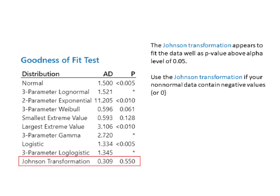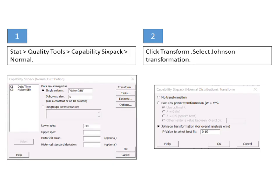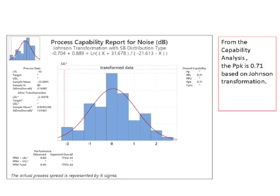Use the Johnson transformation if your non-normal data contain negative values or zero. Select Stat, Quality Tools, Capability 6-Pack, Normal. Click Transform and select Johnson Transformation. From the capability analysis, the Ppk is 0.71 based on the Johnson transformation.